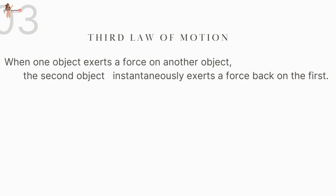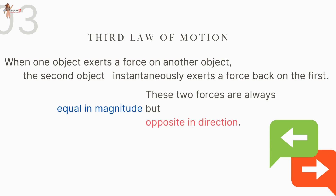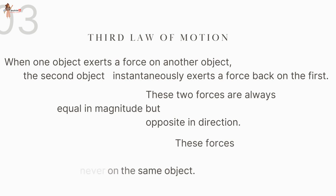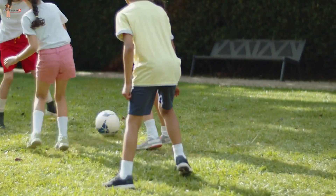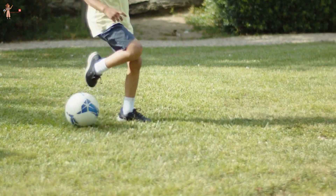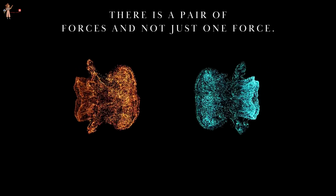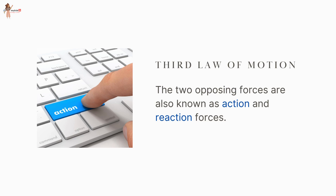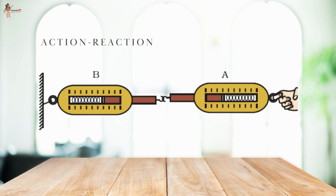The Third Law of Motion states that when one object exerts a force on another object, the second object instantaneously exerts a force back on the first. These two forces are always equal in magnitude but opposite in direction. These forces act on different objects and never on the same object. In the game of football, when players collide while trying to kick, both feel hurt because each applies a force on the other — there is a pair of forces, known as action and reaction forces.